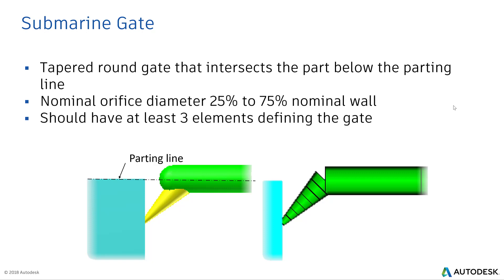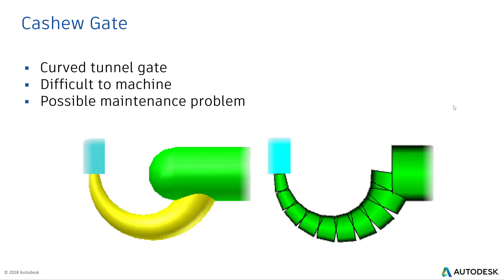As the gate goes all the way below the parting line and then turns up and lands into the part wall, sometimes you need to do projections of extra part beam to land it there. This is also called a hidden gate.